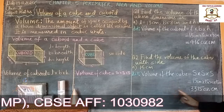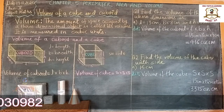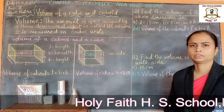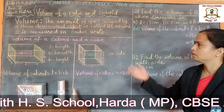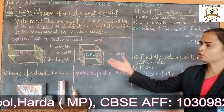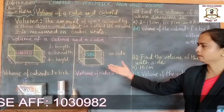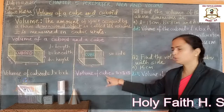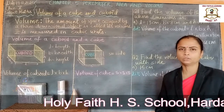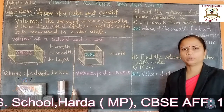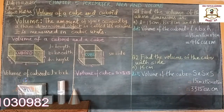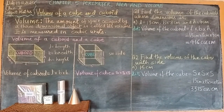Volume is measured in cubic units. I hope you understood. Let us recall: the formula for the volume of a cube is side × side × side, and for a cuboid it is length × breadth × height. I hope you understood. That's all for today's class. Have a nice day. Thank you!